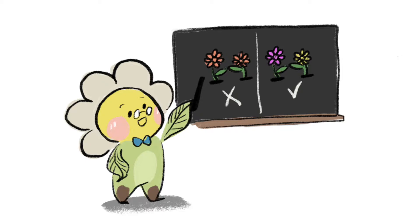Well, self-incompatibility is basically a mechanism adapted by some plants to prevent inbreeding and promote outcrossing. There is a lot of diversity in the way plants become self-incompatible, but essentially they all have ways to either prevent contact with their own pollen or reject their own pollen.